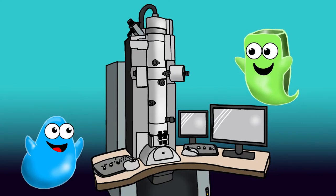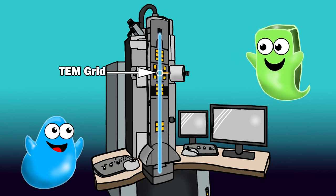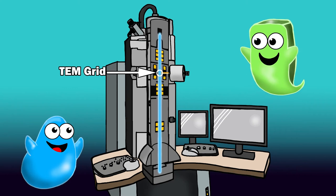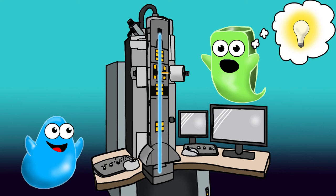The electrons are generated up at the top, and they shoot down the column and through the section on the grid. The electrons are transmitted through the sample. So that's why it's called transmission electron microscope. Makes perfect sense.